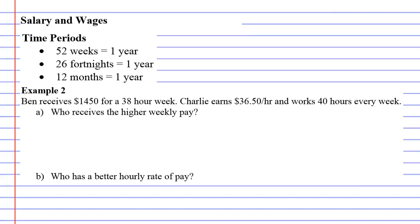We're on to example two. We've got Ben who receives $1,450 for a 38-hour week, and Charlie who earns $36.50 per hour and works 40 hours every week.